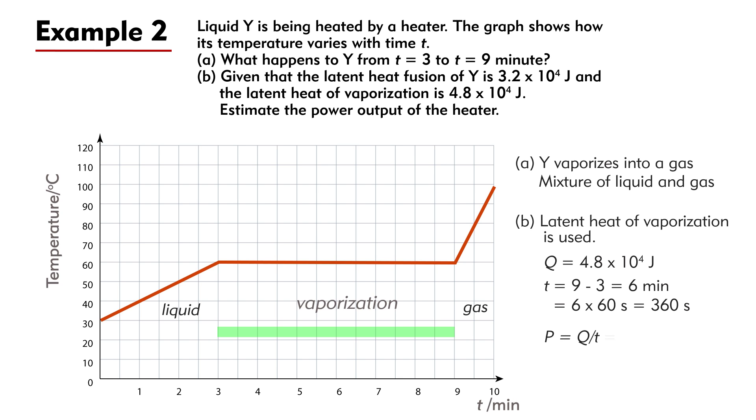Therefore the power of the heater is P = Q / T = 4.8 × 10⁴ / 360 = 133 watts.